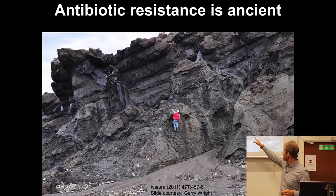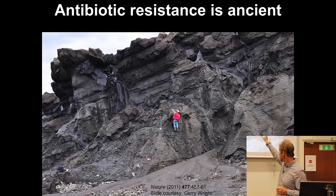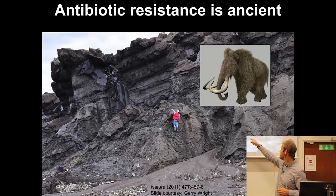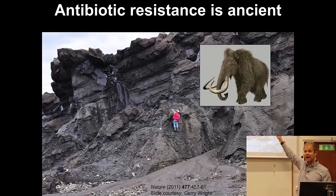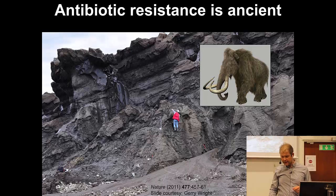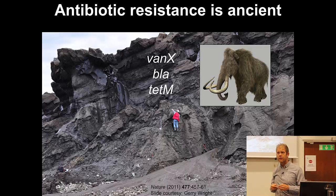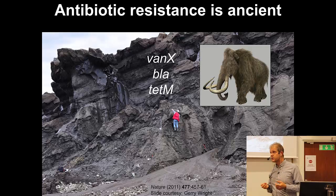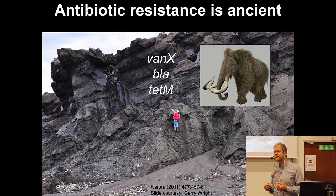This is a picture of a guy who digs out permafrost — frozen soil — 30,000-year-old frozen soil. When they sequence the DNA in there, they find genes from these organisms, not surprisingly because they are 30,000 years old, side by side with bacterial genes that provide resistance to vancomycin, beta-lactams, and tetracycline. How is that? They didn't use much vancomycin in intensive care 30,000 years ago, yet these bacteria still carried these genes.